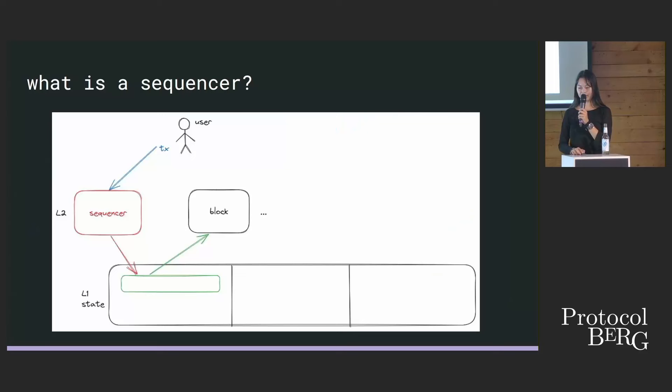From the diagram: the user sends the transaction, somehow it ends up at the sequencer, the sequencer sequences it, and it ends up in a rollup block.